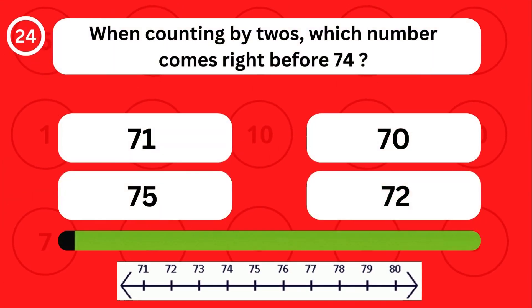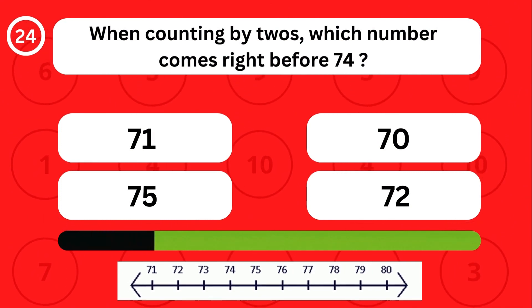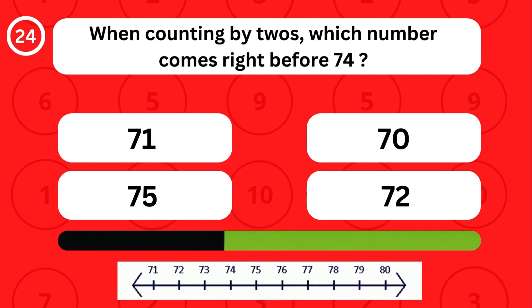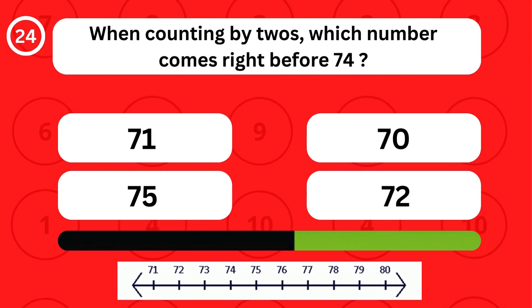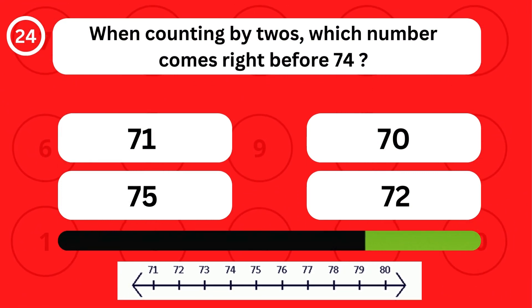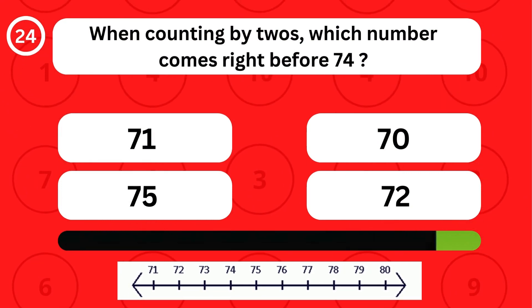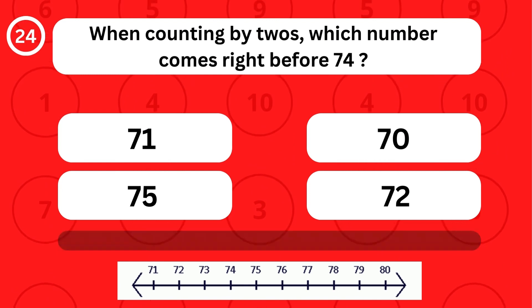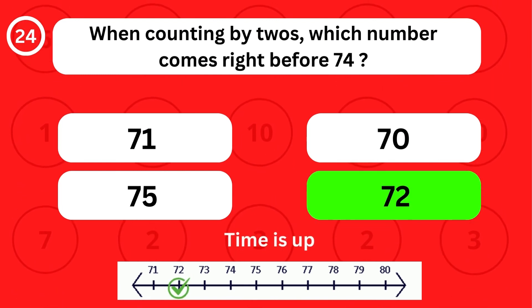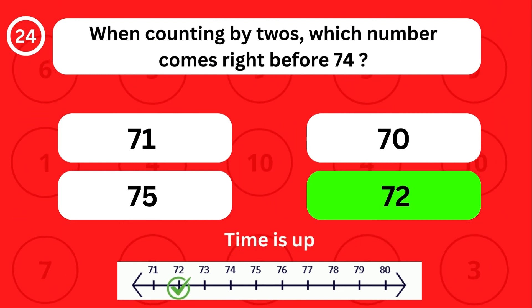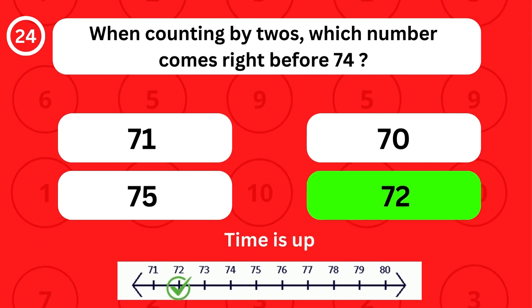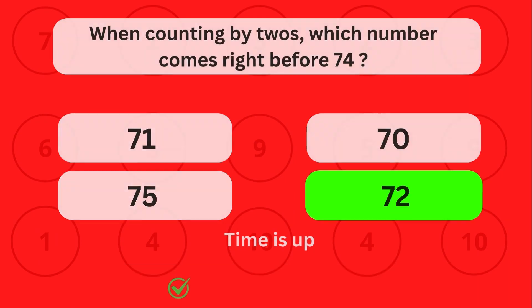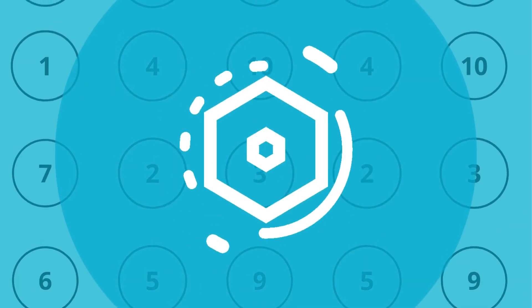When counting by twos, which number comes right before 74? The number 72 comes right before 74.